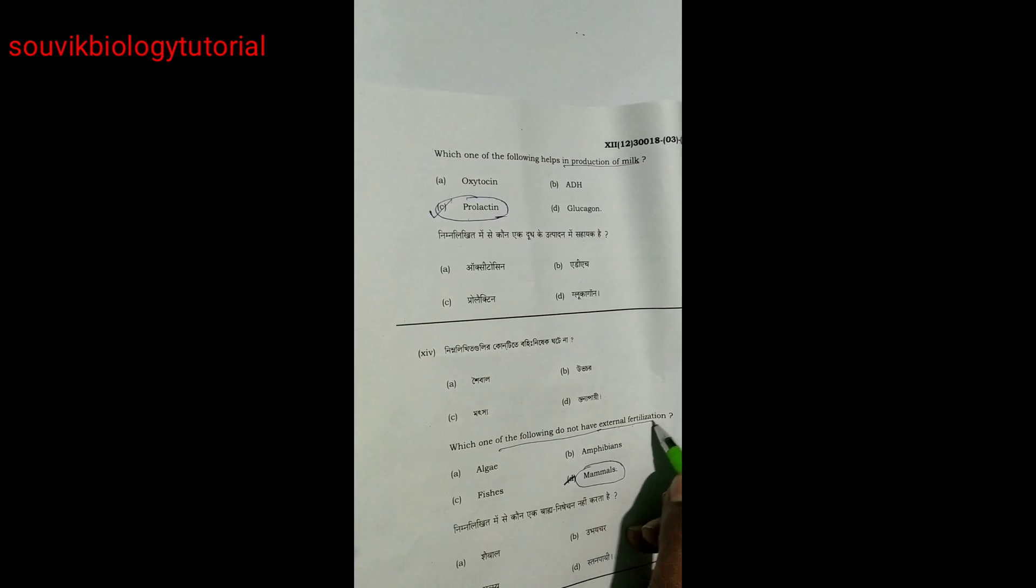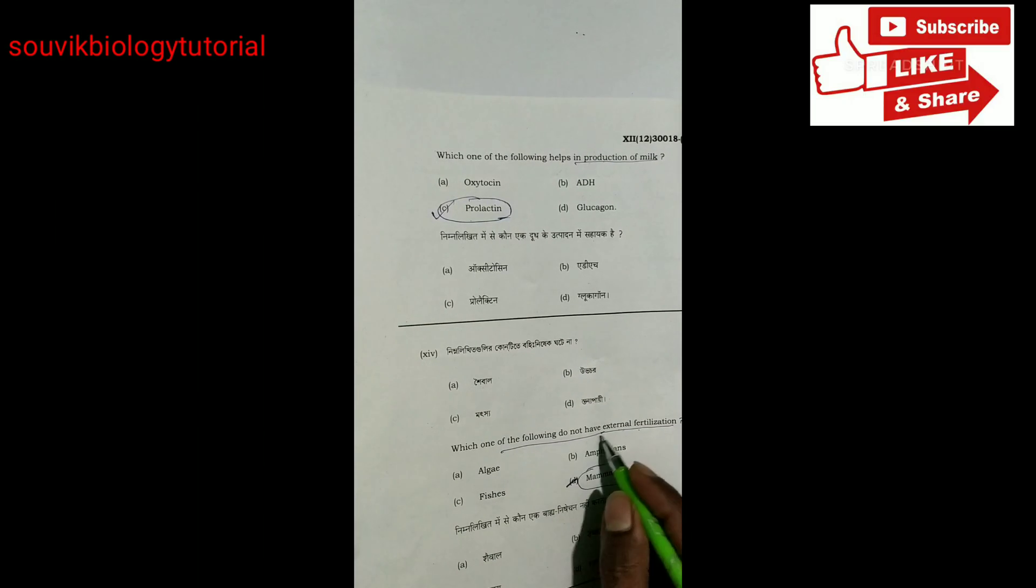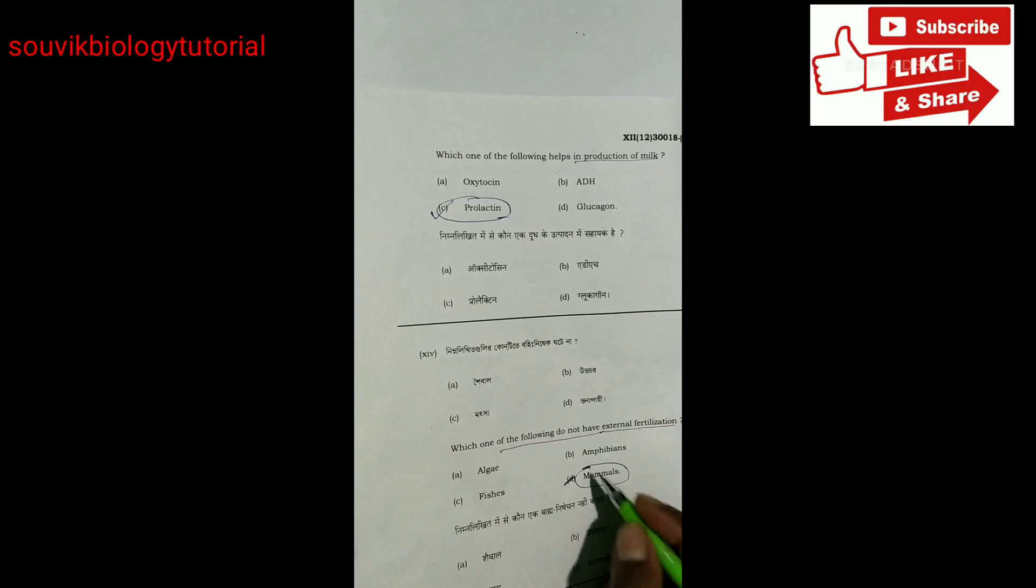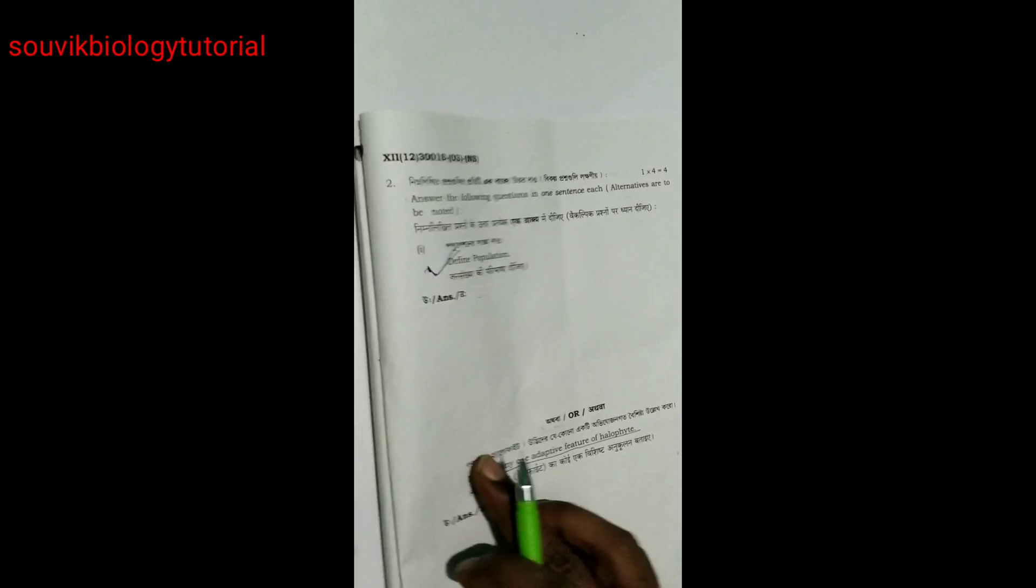Which one of the following do not have external fertilization? Mammals. Because algae, fishes, amphibians have external fertilization. Only mammals have internal fertilization. So mammals is the right answer.